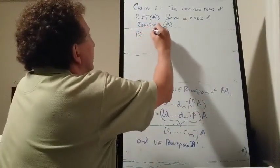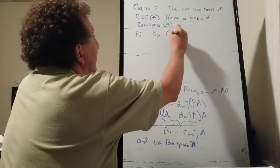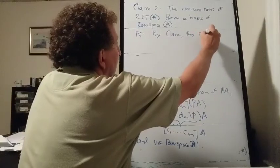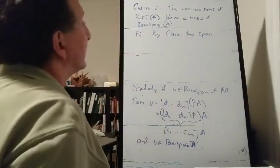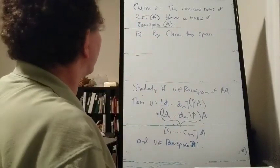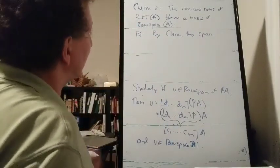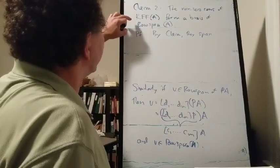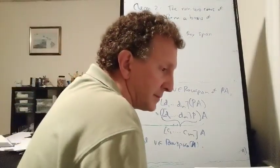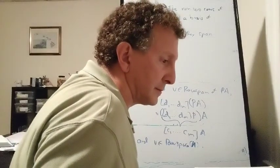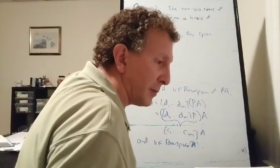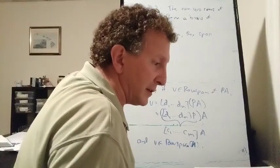To see this: by the first claim, the non-zero rows span the row space of the row echelon form, which equals the row space of A. So anything in the row space of A can be expressed as a linear combination of these non-zero rows. To see that they're linearly independent, suppose some linear combination of them equals zero.